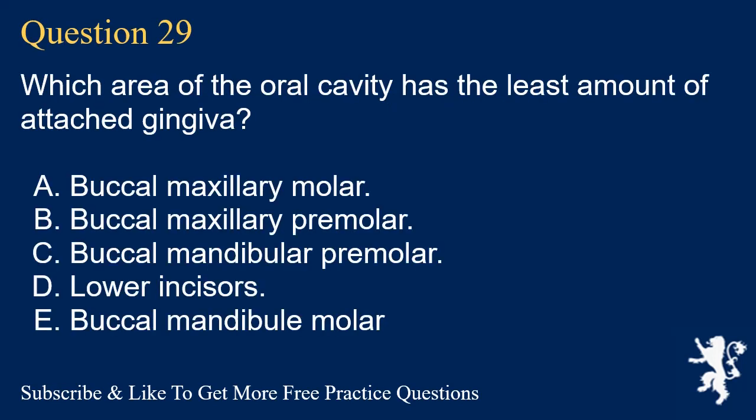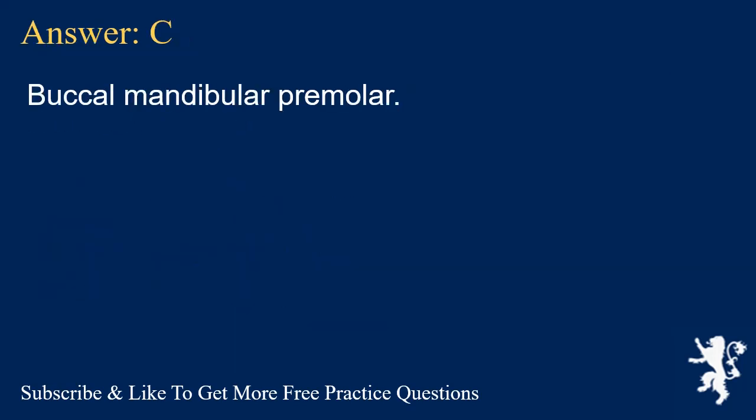Question 29. Which area of the oral cavity has the least amount of attached gingiva? A. Buccal maxillary molar. B. Buccal maxillary premolar. C. Buccal mandibular premolar. D. Lower incisors. E. Buccal mandibular molar. Answer: C. Buccal mandibular premolar.